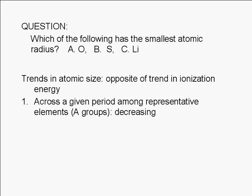A period refers to a horizontal row in the periodic table. The trend is also decreasing as you go up a group. A group refers to a vertical column in the periodic table.